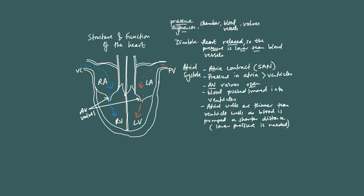Now we talk about ventricular systole. What began these events comes down to regulation of the cardiac cycle by the sinoatrial node — that's something covered in year two. As the wave of depolarization reaches the apex of the heart and spreads upwards from there, the right and left ventricles contract.